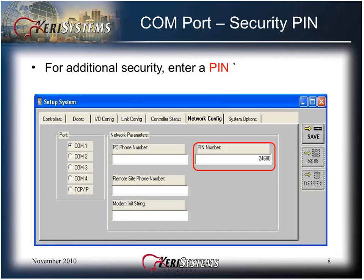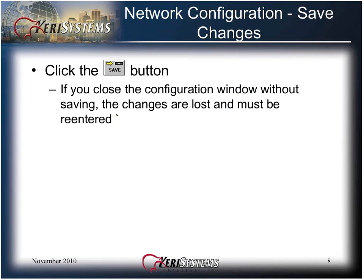For additional security, you may enter a PIN number. The PIN prevents accidental overrides and hacking by preventing other software installations of DOORS from accessing the site and the master controller. The PIN can only be changed while connected to the master. Then click the Save button. If you close the window without saving, the changes are lost and must be re-entered. After you save the communication settings, you must close and reopen the DOORS program.